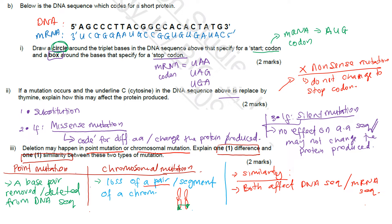For the second mark, the similarity between point mutation and chromosomal mutation is that both will affect the DNA sequence, and therefore will also affect the mRNA sequence.